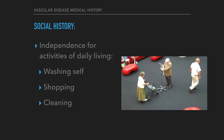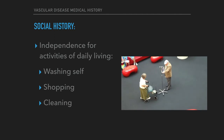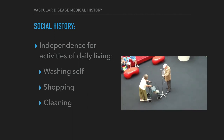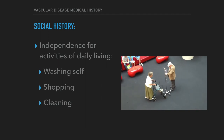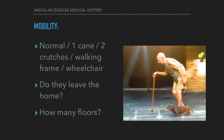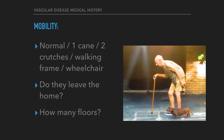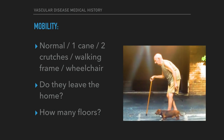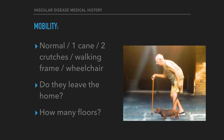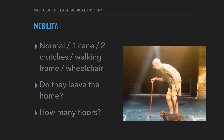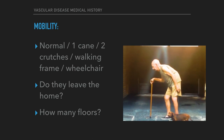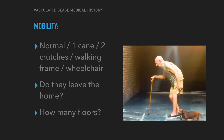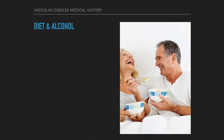Social history: independence for activities of daily living, such as hygiene, shopping, and cleaning. Mobility: unassisted, one cane, two crutches, walking frame, or wheelchair. Do they ever leave the home? How many floors are they able to climb? Diet and alcohol intake history.